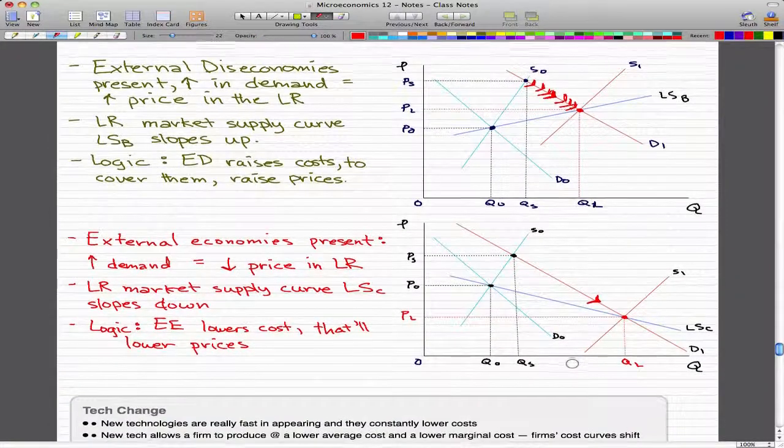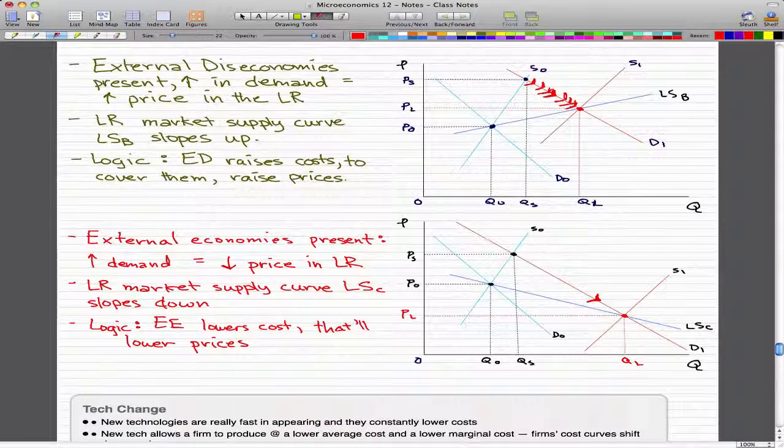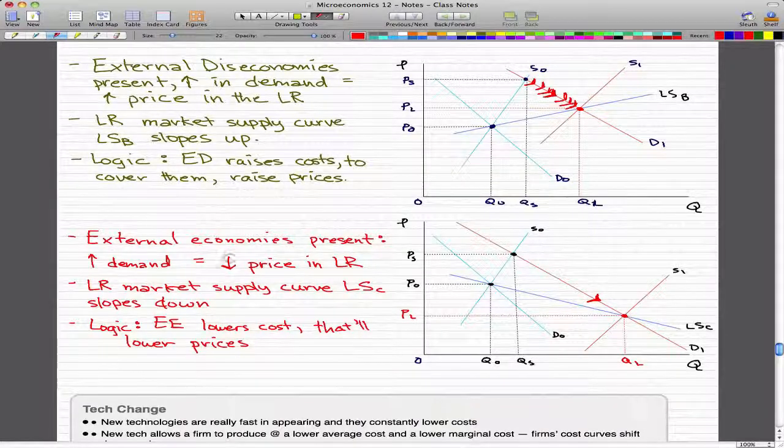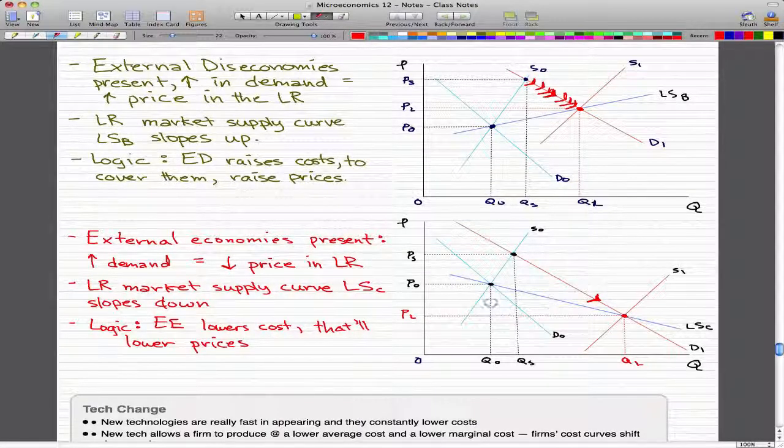And the last factor is external economies. When external economies are present, increase in demand causes a decrease in price in the long run.